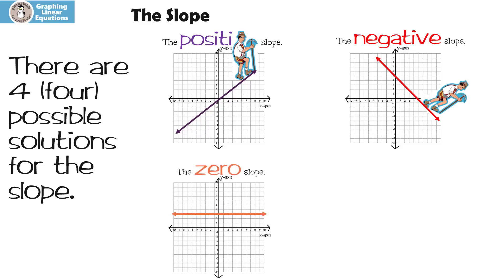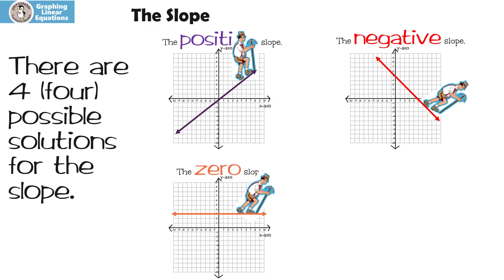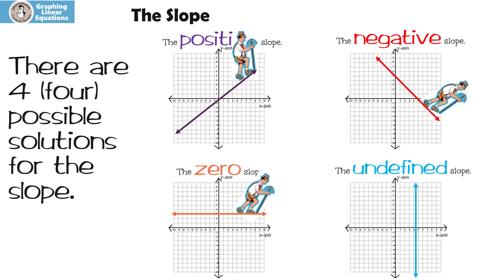Another possibility is the zero slope. Our yodeler guy isn't going up or down — he's just going straight across, so that's zero. And finally, we have the undefined slope. The undefined slope is straight up and down.